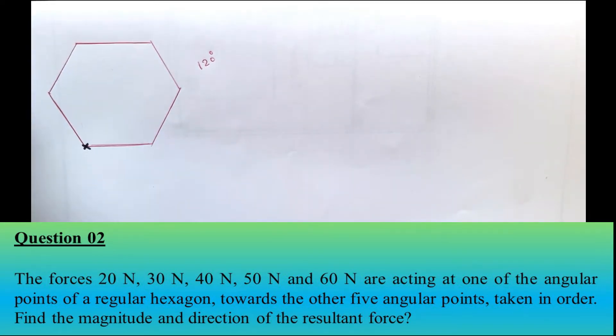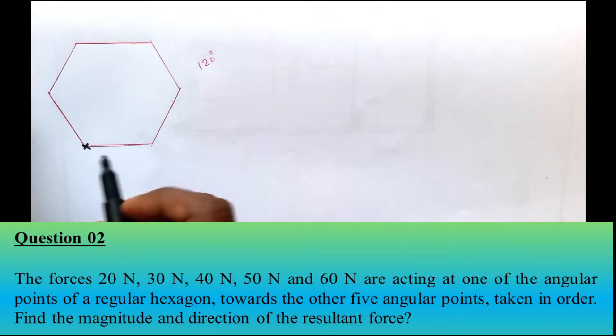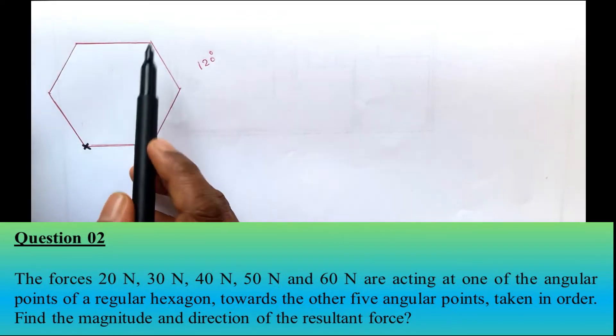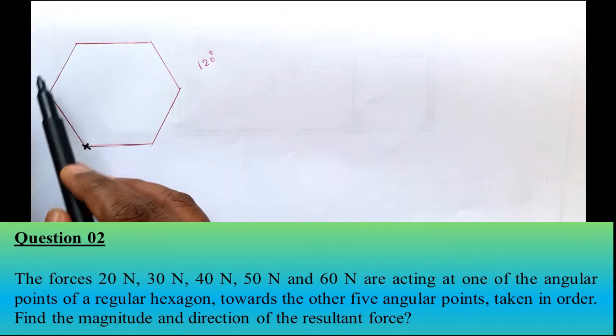The forces are acting towards the other 5 angular points taken in order — that is, each force acts towards one of the remaining 5 angular points of the hexagon.